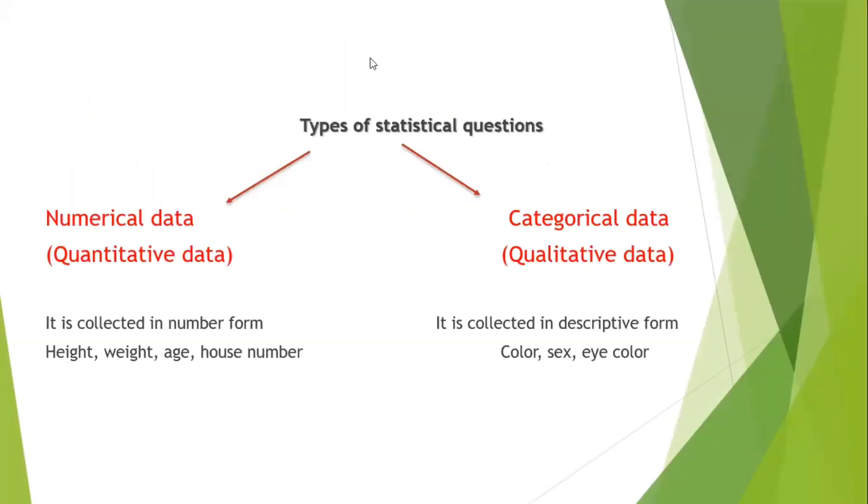We took two types of questions. Statistical and non-statistical. Now let's take types of statistical data. Non-statistical is direct and we answer it directly. Statistical questions can have answers that are numerical data or categorical data. Numerical data has another name, quantitative data, coming from quantity. Numerical means it's written as numbers. Categorical or qualitative comes from quality, and we describe something with it.